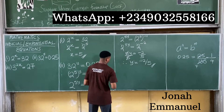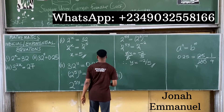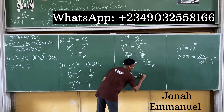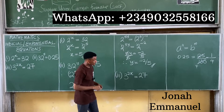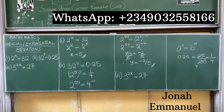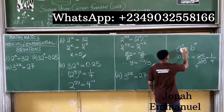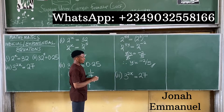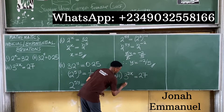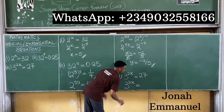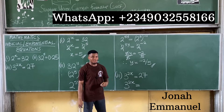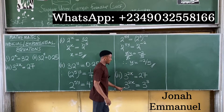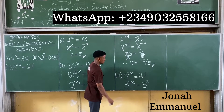Let's simplify the third one: 3 to the power 2x is equal to 27. So how do I solve this? I have 3 to the power 2x is equal to 27, which is simply 3 to the power 3, because 3 times 3 gives you 9, times 3 gives you 27. I'm trying to express both sides in the same base. When they're in the same base, we can cancel out.